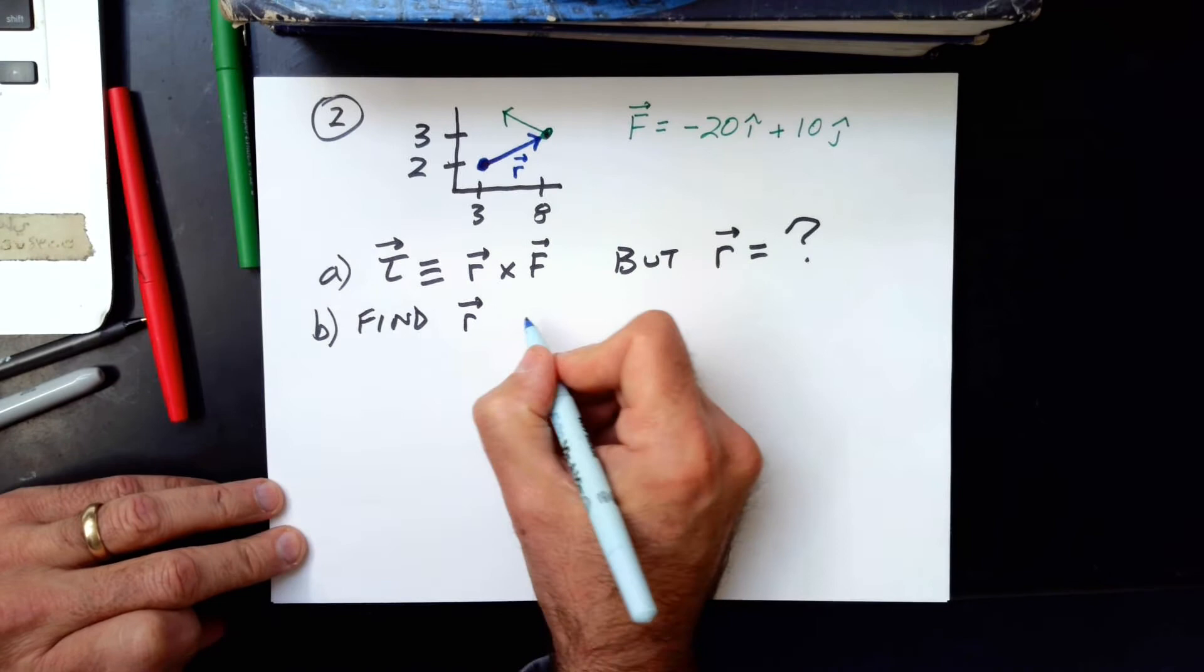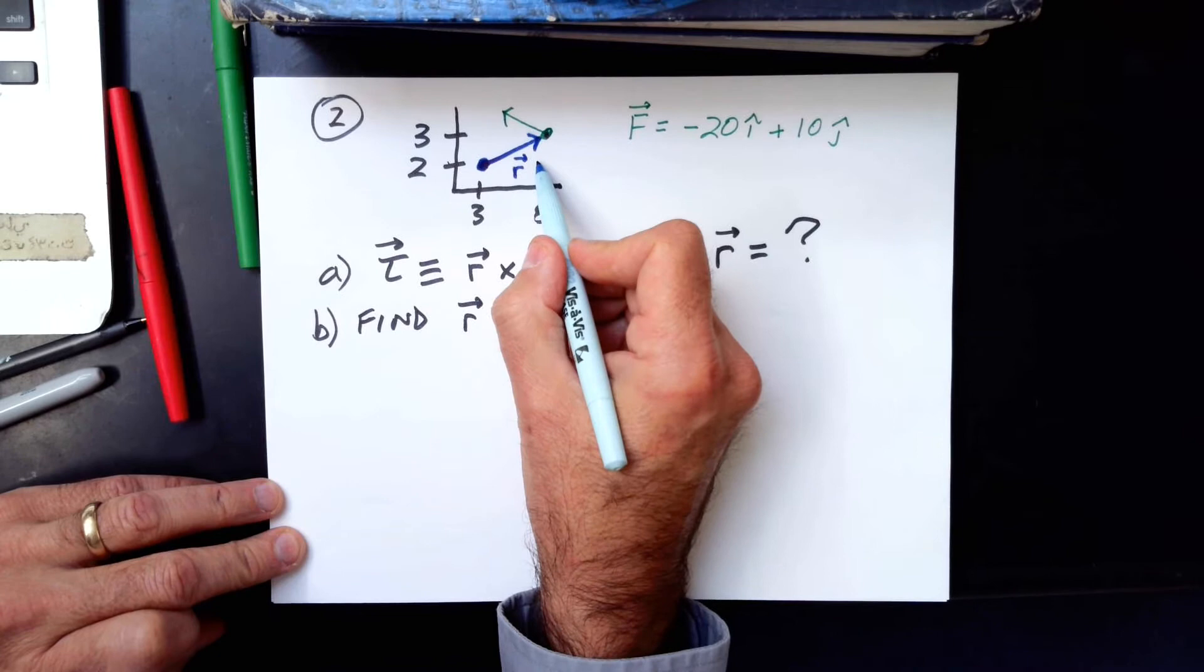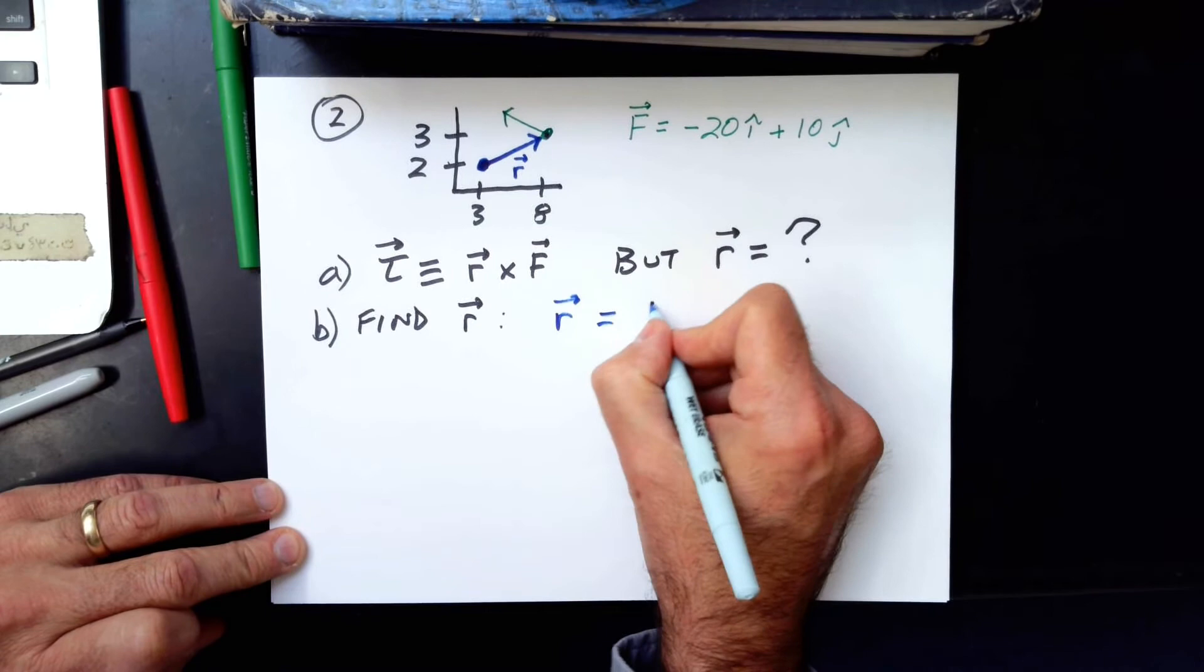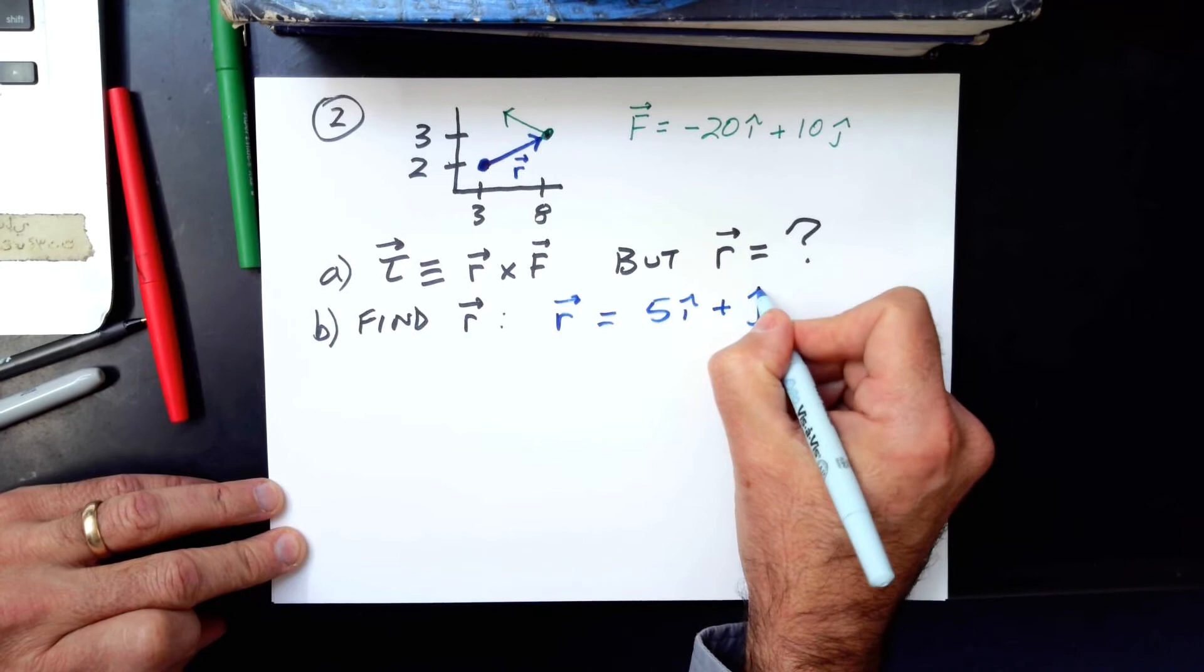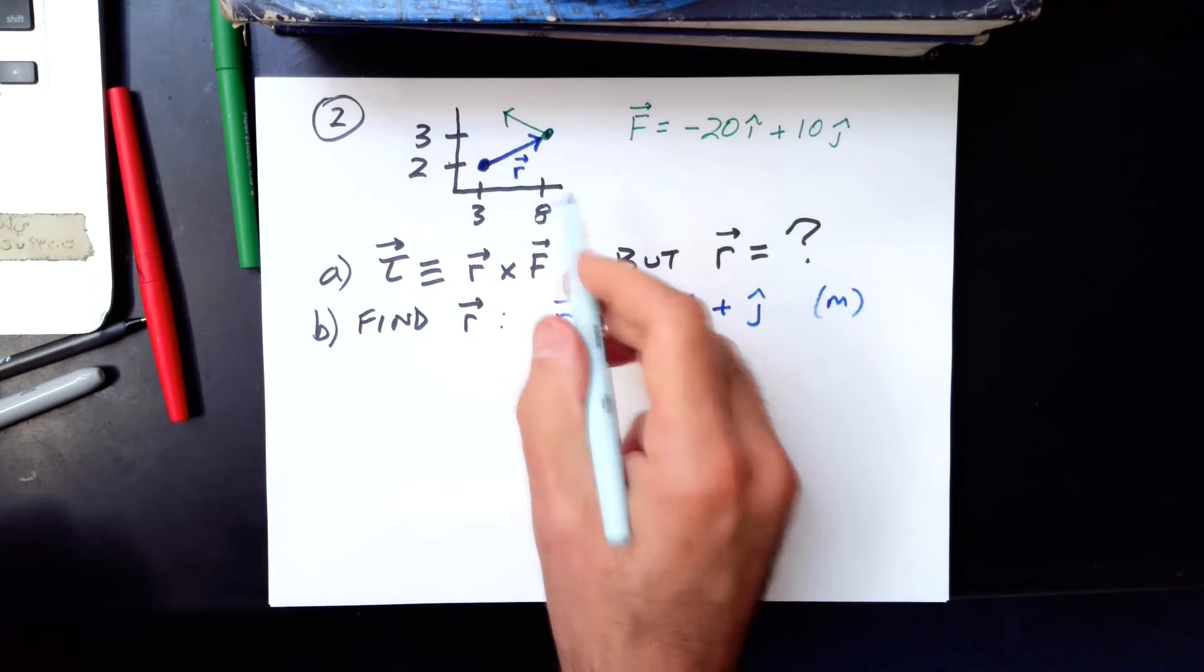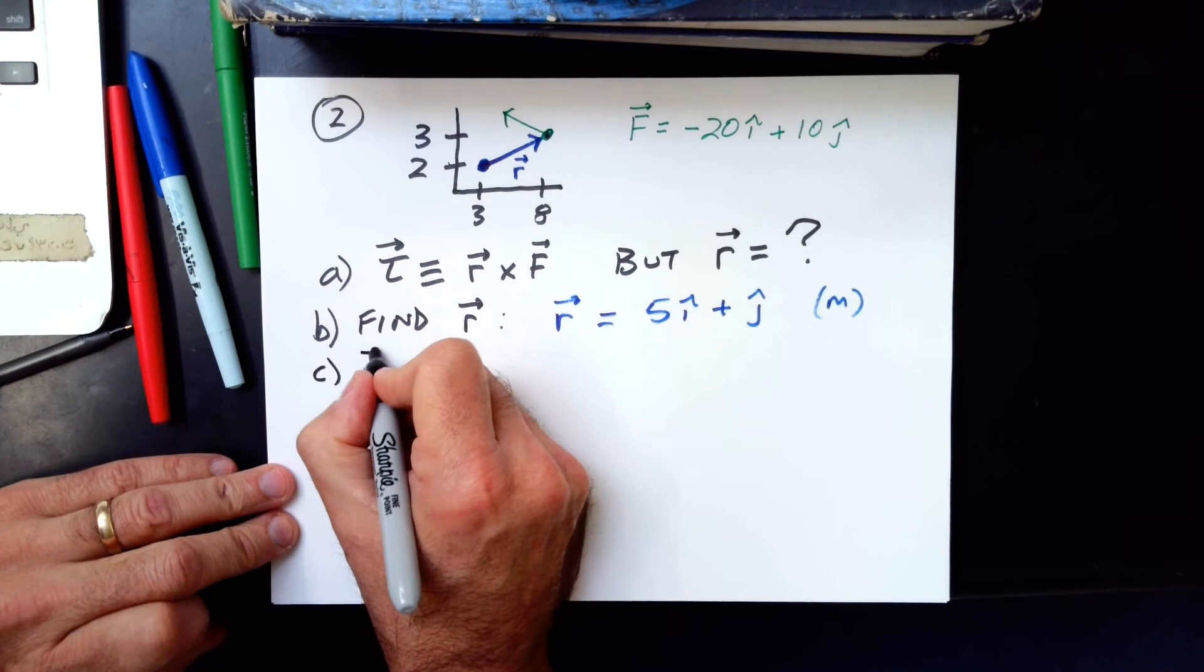Let's figure out what that would be. So R, I went how many steps right in the I direction and how many steps in the J direction? Well, I went five steps in the I direction and I went one step in the positive J direction. And of course, that's meters. Five meters right, one meter up in our graph here. So now let's figure out the torque.